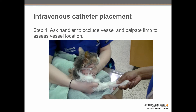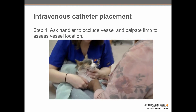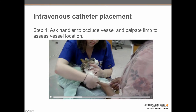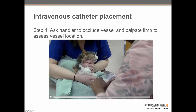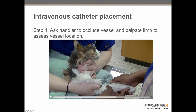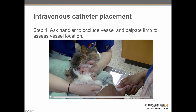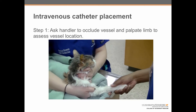Let's go through these steps individually. Step 1: ask the handler to occlude the vessel and palpate the limb to assess vessel location. Here we can see that just like with the dog, the cat is restrained by using a hand to hold the head, and then the other hand is being used to roll the vein upward on the limb with the thumb across the inside of the elbow to cause the vessel to stand out.